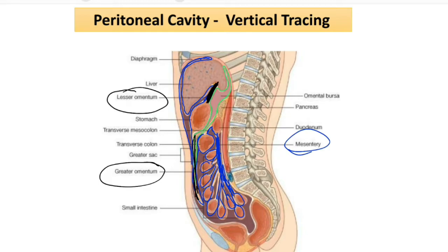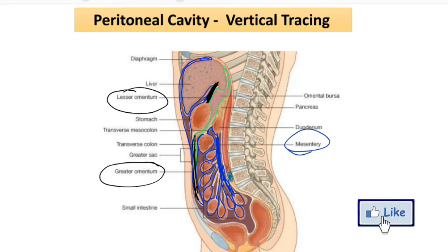The lesser omentum is above the stomach and the greater omentum is below the stomach. So the lesser omentum is related to the lesser curvature of the stomach and the greater omentum is related to the greater curvature of the stomach.